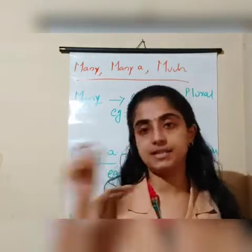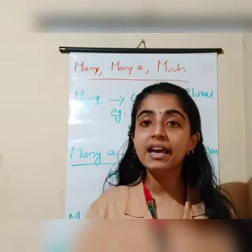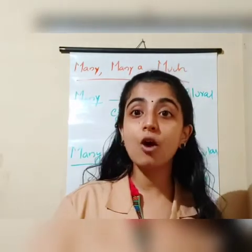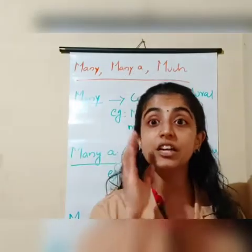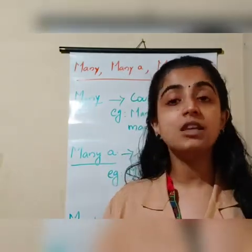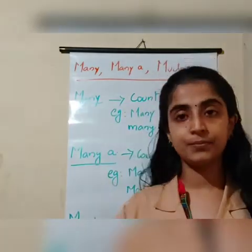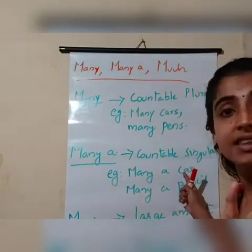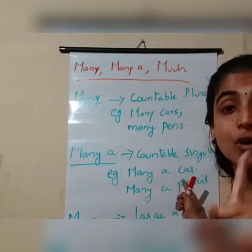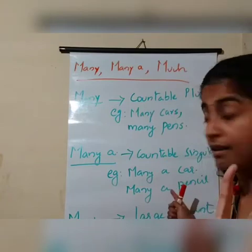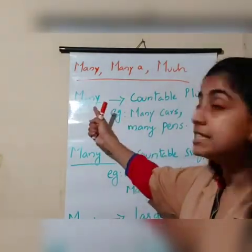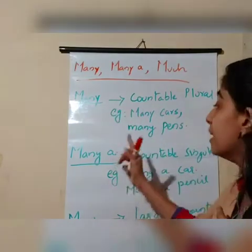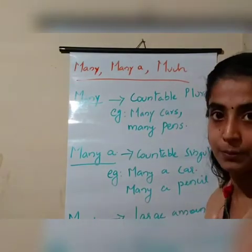So I can say: many a soldier was killed. Why? I used many a soldier because soldier is a countable noun, but soldier is singular — there is only one soldier. Another example: many a car. Why many a car? Because car is only a single thing here — it is countable and also singular, there is only one car. So I can use many a car. Many a can be used if there is only one and it should be countable.